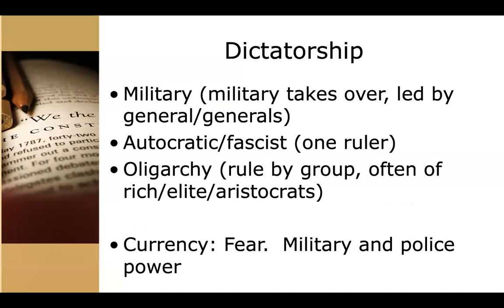Dictatorships, of course, quite often are military, fascist, autocratic, or ruled by a group — an oligarchy of rich people, aristocrats, business owners. And how do they rule? They rule through power, they rule through fear — fear that if you go against them, you're going to be killed. That often includes fear of even saying anything against these dictatorships.